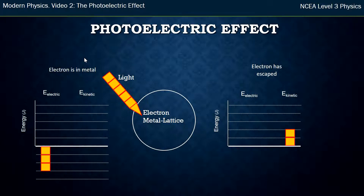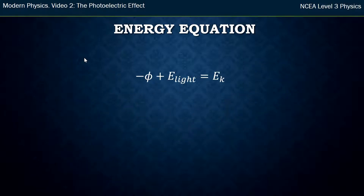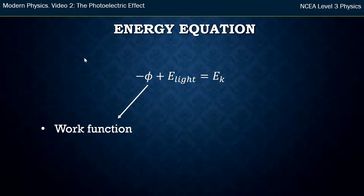So the electric energy — the negative energy — it starts with, given the symbol negative five because it's negative energy. We add light energy and that gives us kinetic energy. That balances now because we've got negative three energies plus positive five and that equals positive two. The name we give for the energy well — the negative energy the electron started with when it was trapped in the metal — is called the work function. It's a property of the metal, so different metals have different work functions, different depth wells. That means it's easier or harder for an electron to escape from different types of metals.